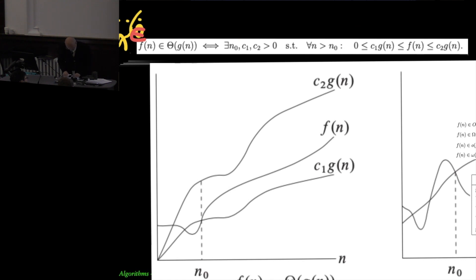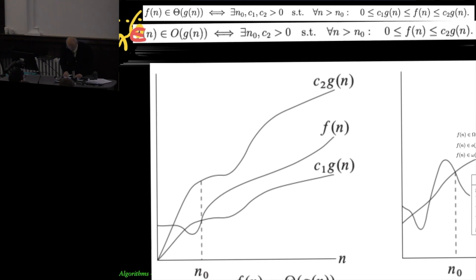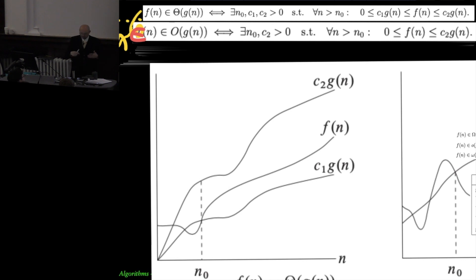There exists some n zero from where onwards I can dominate f of n with g of n with a suitable multiplier in front. This is the big o which is the one that is most frequently used.